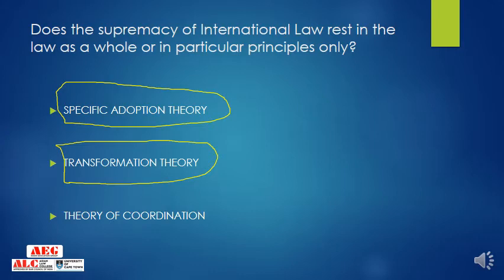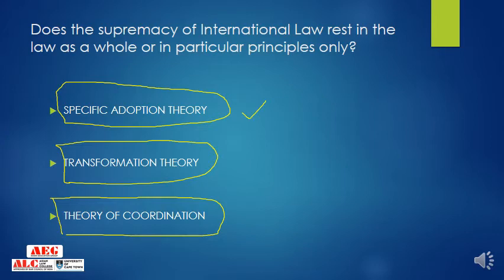A third theory, the theory of coordination, was put forward by Sir Fitzmaurice. He argued that the two systems do not come into conflict — international law and municipal law are not conflicting; they operate at different spheres, each being superior in its own field. So specific adoption theory is where you specifically adopt international law into municipal law; transformation theory is where you transform existing municipal law; and coordination theory holds there is no conflict between the two systems.